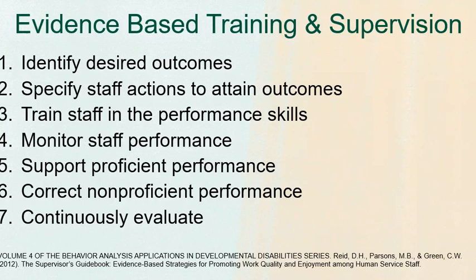They specify seven steps for evidence-based training and supervision. One: identify the desired outcomes. Two: specify staff actions to attain those outcomes. Three: train staff in the performance skills. Four: monitor staff performance. Five: support proficient performance. Six: correct non-proficient performance. And seven: continuously evaluate.